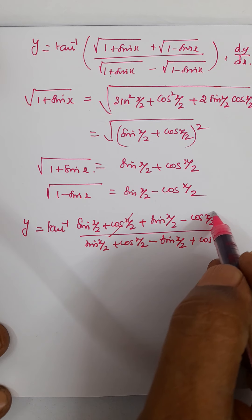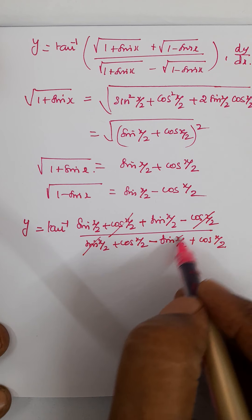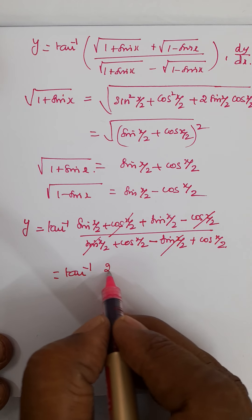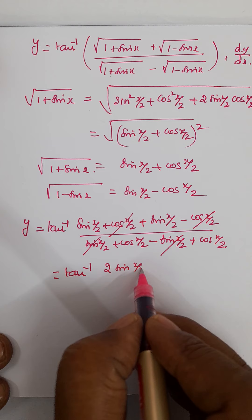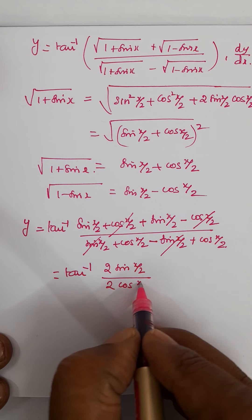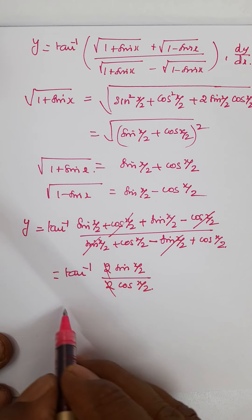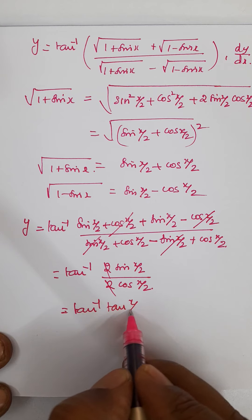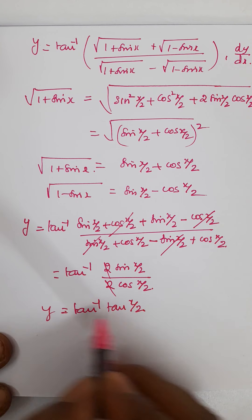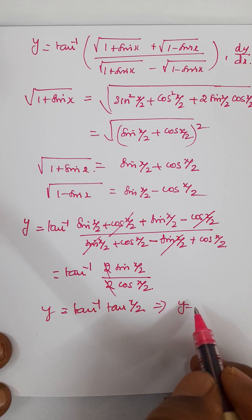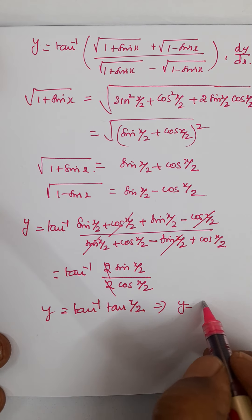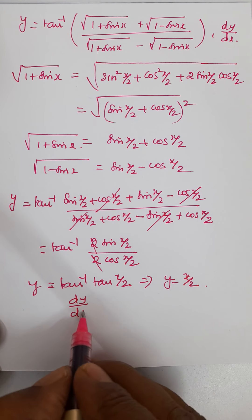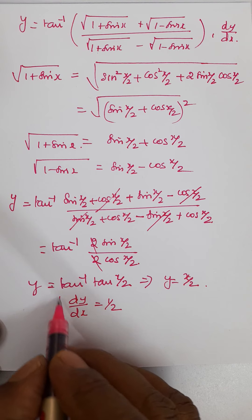In the numerator the cos terms cancel, and in the denominator the sin terms cancel. This gives tan inverse of 2 sin x by 2 divided by 2 cos x by 2. The 2s cancel, giving tan inverse of tan x by 2. So y equals x by 2, and therefore dy by dx is equal to just one half. Very simple.